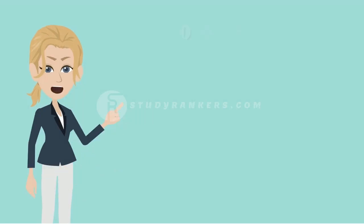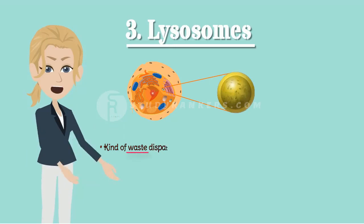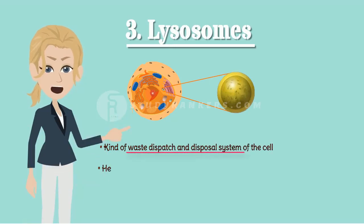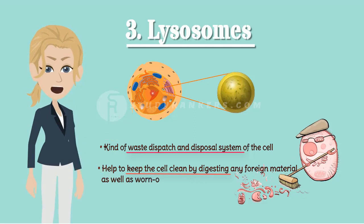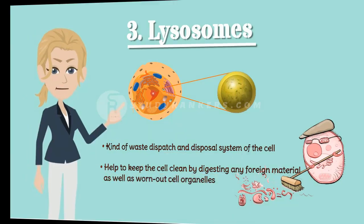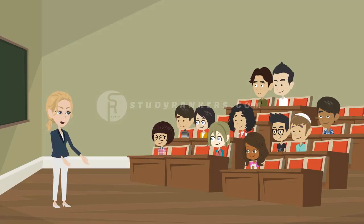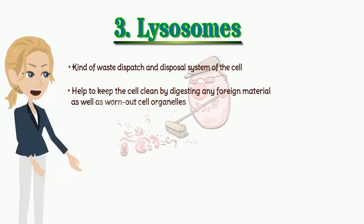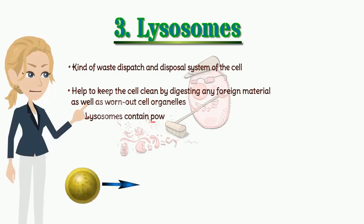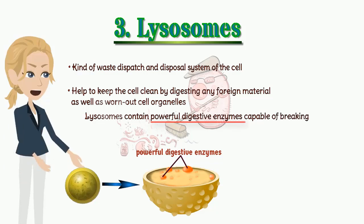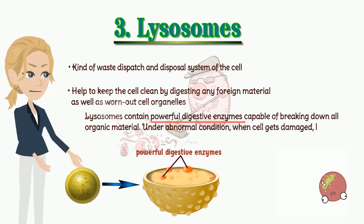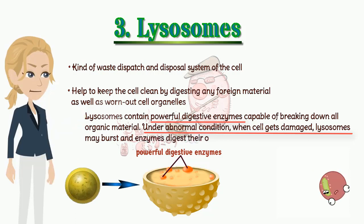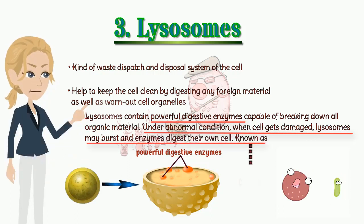We will now study about lysosomes. Lysosomes are a kind of waste dispatch and disposal system of the cell. They help to keep the cell clean by digesting any foreign material as well as worn-out cell organelles. Lysosomes contain powerful digestive enzymes capable of breaking down all organic material. Under abnormal conditions, when the cell gets damaged, lysosomes may burst and the enzymes digest their own cell. Therefore, they are also known as suicide bags.